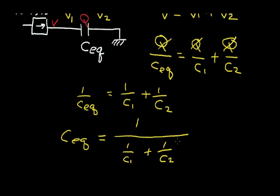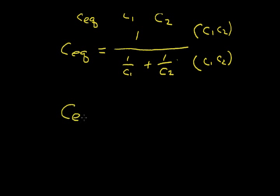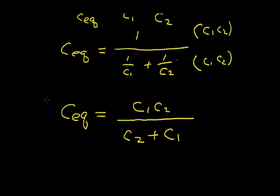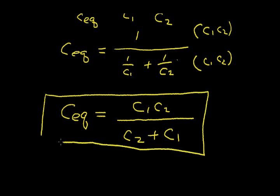Now I can multiply the numerator and the denominator by C1 times C2, and do the same for the denominator. That gives C_EQ equals C1 times C2 divided by C1 plus C2. So the equivalent capacitor for two capacitors in series is the product of the two capacitors divided by the sum of the two capacitors — very similar to the equation we got for resistors in parallel.